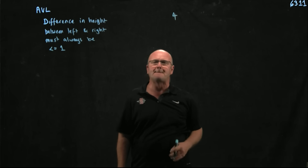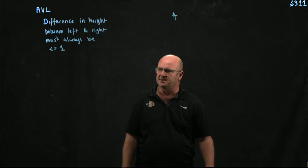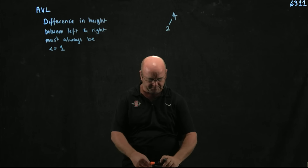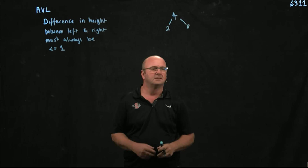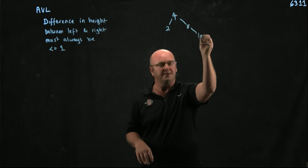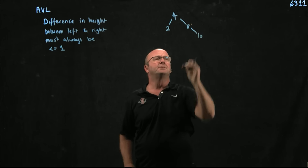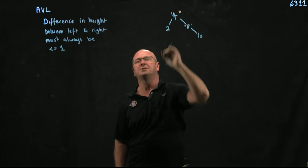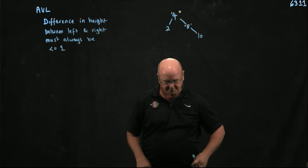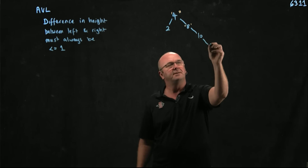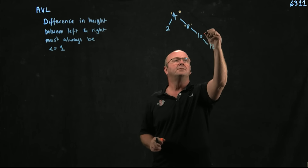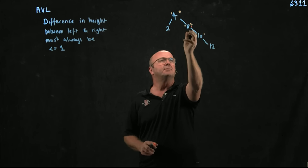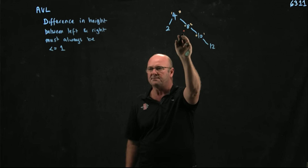If we start with a four, the difference in height between left and right is zero because there's no children. If I add a two, I've got one child on the left and zero on the right, so that's okay. If I add an eight, I've got one child on either side, that's okay. If I add a ten, now I've got one child on the right of the eight and zero on the left of the eight, and two children on the right of the four and one on the left. And then if I add a twelve, I've got two children on the right of the eight and zero on the left, so my difference in heights at the eight is bigger than one. So I've got a violation of my tree.